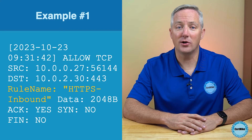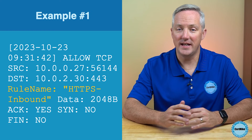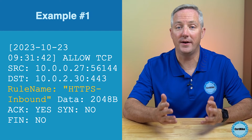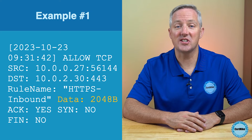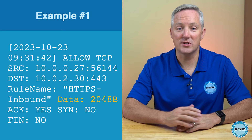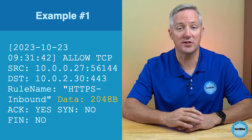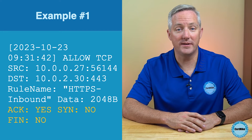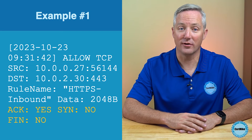Port 443 is the standard port for HTTPS traffic used for secure web browsing. Next, we have the identifier of the specific rule that was triggered in the firewall's configuration — the HTTPS inbound rule, which specifies conditions for inbound HTTPS traffic. The next field indicates the size of the data packet: 2048 bytes. Finally, we have the TCP flags. These tell us that the packet had the ACK flag set, and did not have the SYN or FIN flag set.